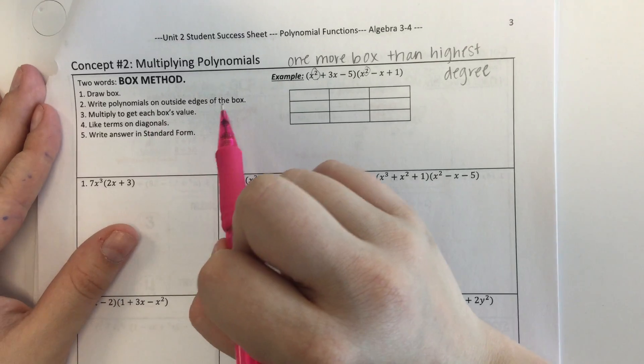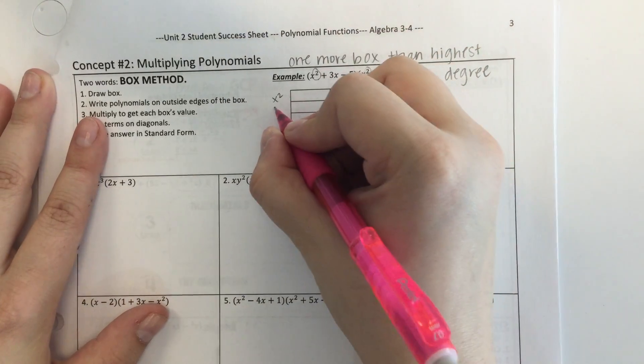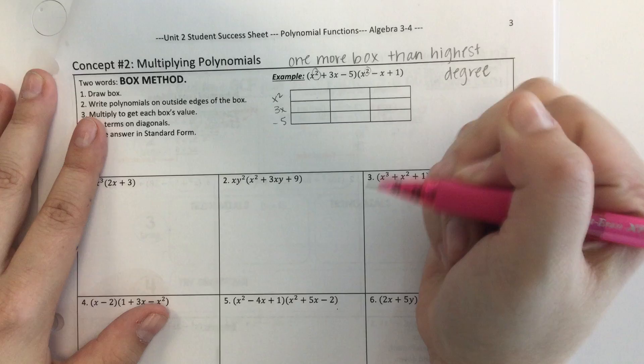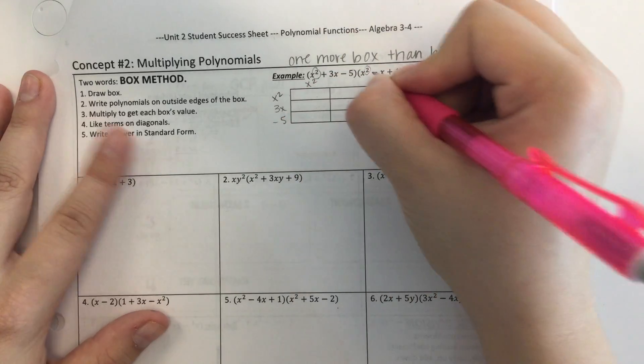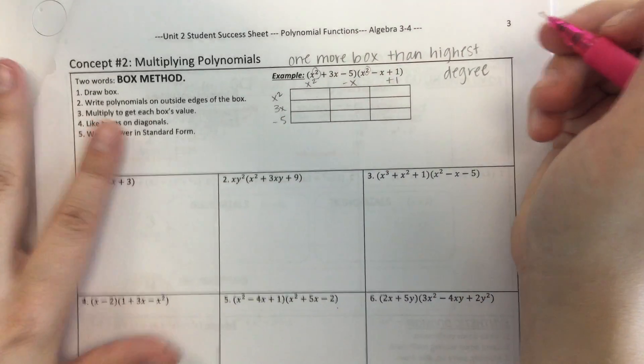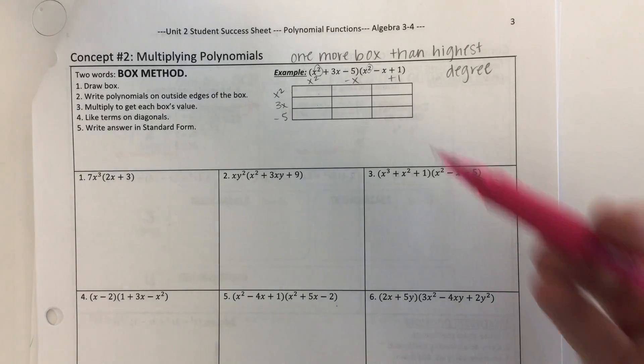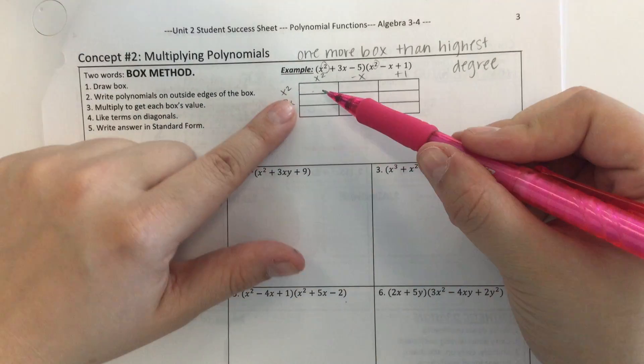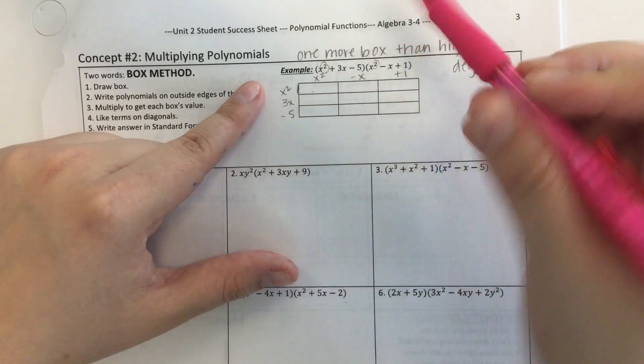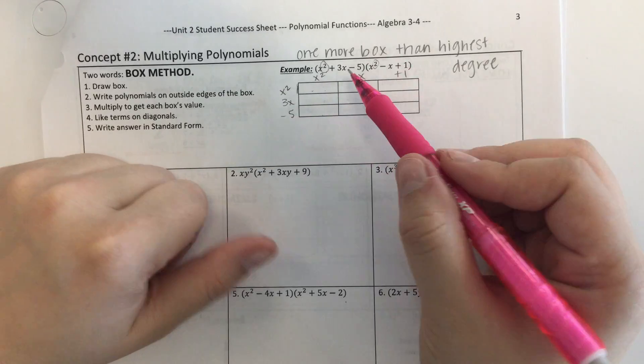You're going to write your polynomials on the outside edges of the box. So I left 1 box for x squared, 1 box for 3x, and 1 box for negative 5. I'm going to do the same thing on the top. 1 box for x squared, 1 box for negative x, and 1 box for 1. This should look somewhat familiar to the factoring box that I taught you guys, but instead of factoring we're actually doing the reverse. We're going to multiply.